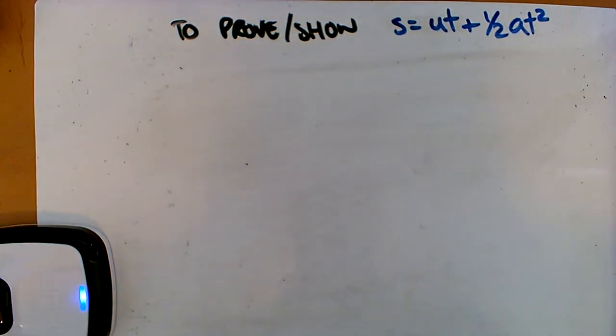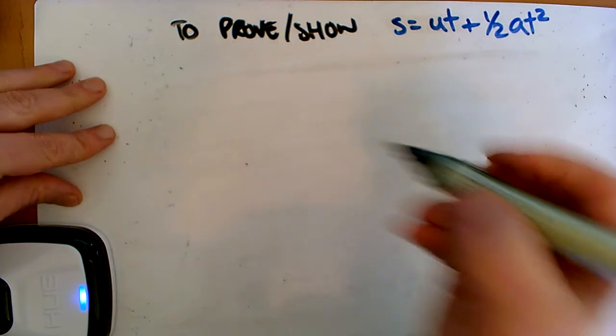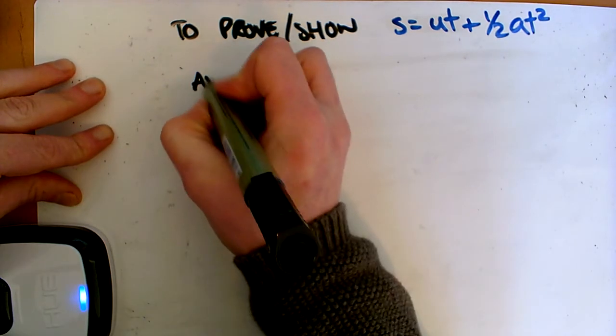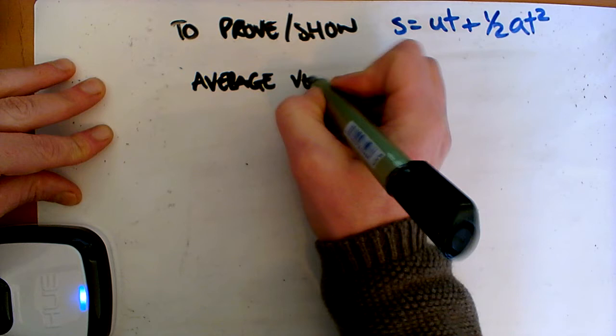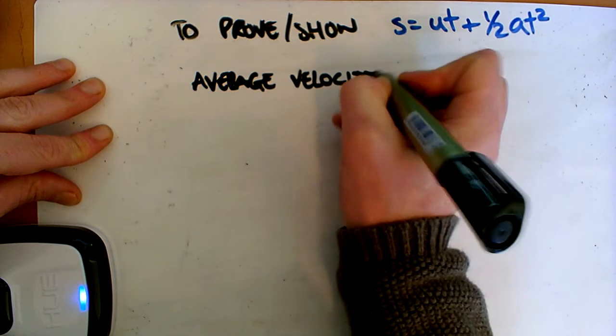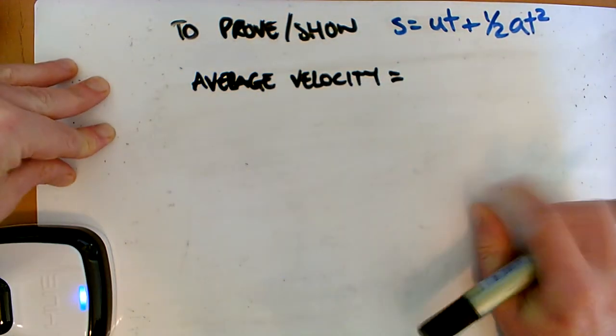Now this one takes a little bit of thought. Okay, so what we're going to start with is our average velocity. So our average velocity is the same way we get any averages.